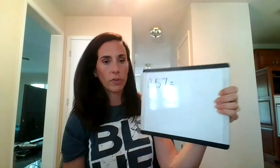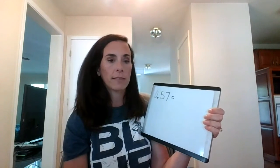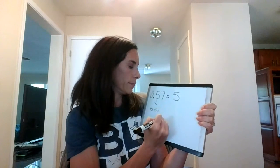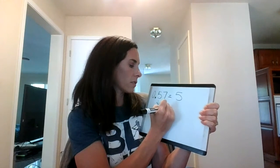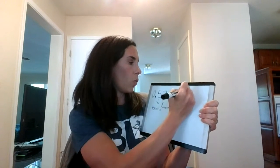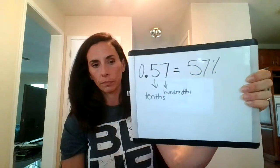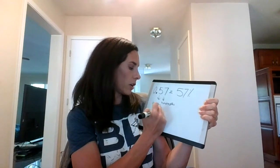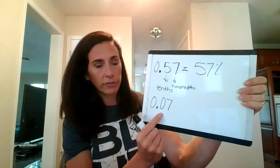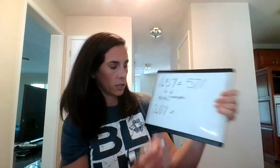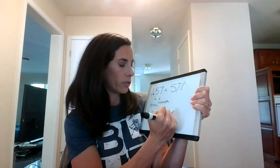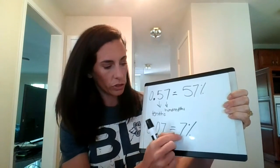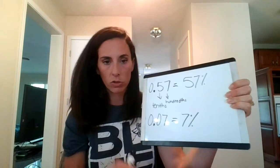The other thing is our decimals. We want to know: 57 hundredths — what percent is that? Our tenths become our tens, and our hundredths become our ones. So that would be 57%. The only thing that gets tricky: if we have a zero in the tenths place, we have to have a zero in the tens place. So this is only 7% — we don't have anything in the tenths, we just have a 7 in the ones place.